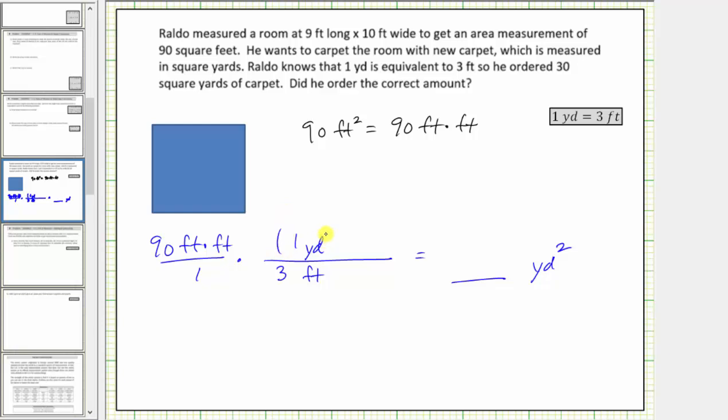But notice how this unit fraction alone is not enough to simplify out both factors of the feet. And therefore we have to multiply by another fraction of one yard divided by three feet. Notice how by using two unit fractions of one yard divided by three feet, both factors of feet simplify to one, leaving us with the correct units of yards squared.